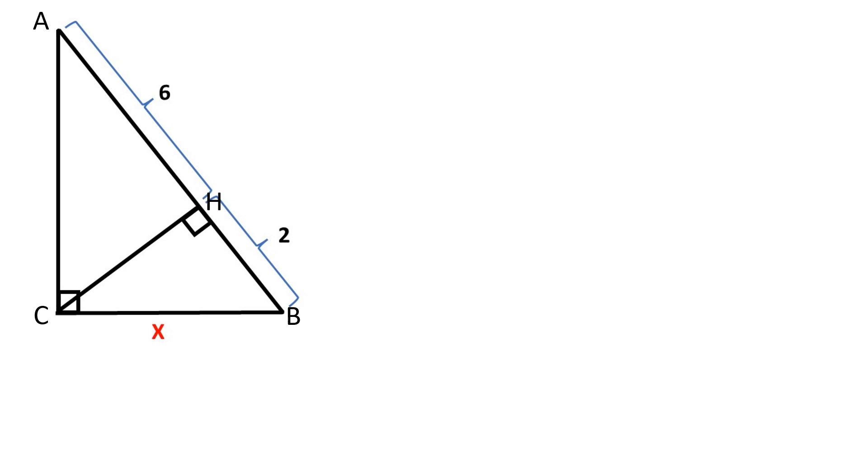Let's solve this problem. Triangle ABC is a right triangle. Angle ACB is equal to 90 degrees. AB is the hypotenuse.